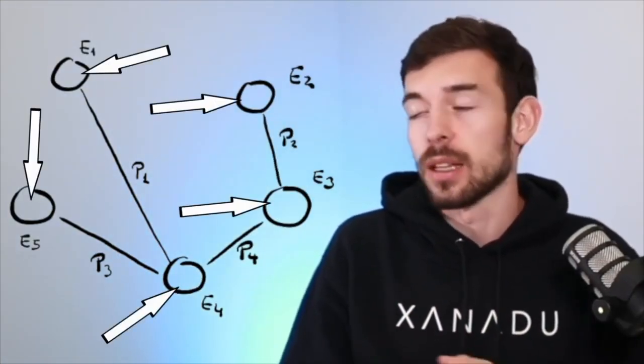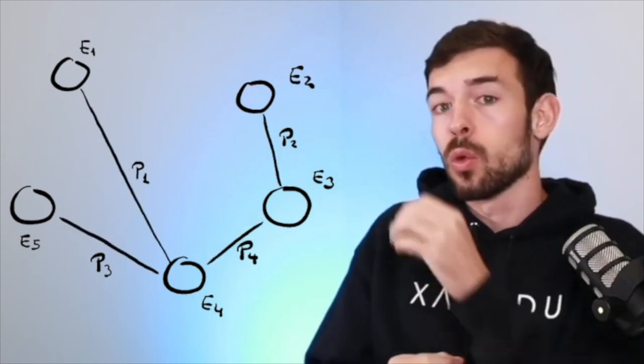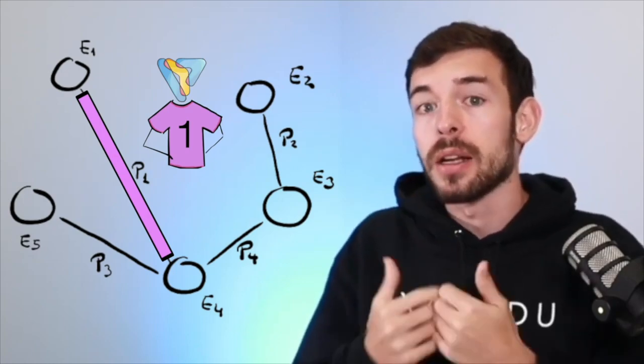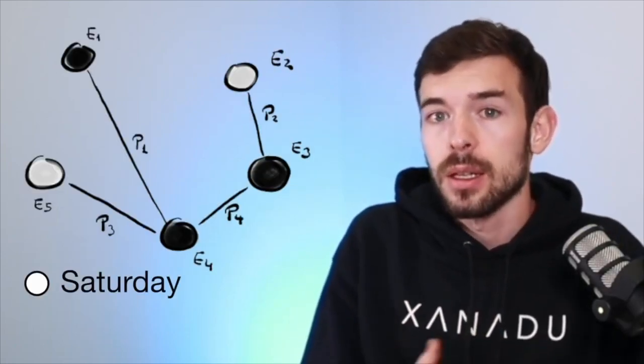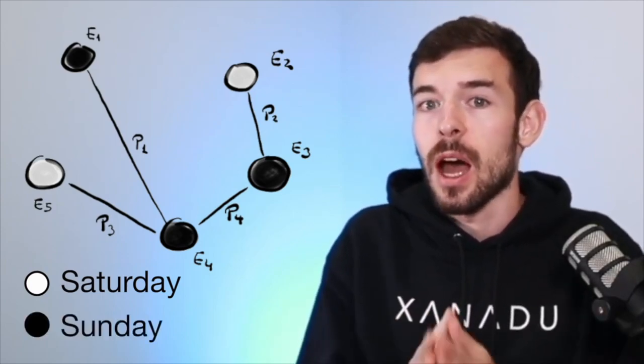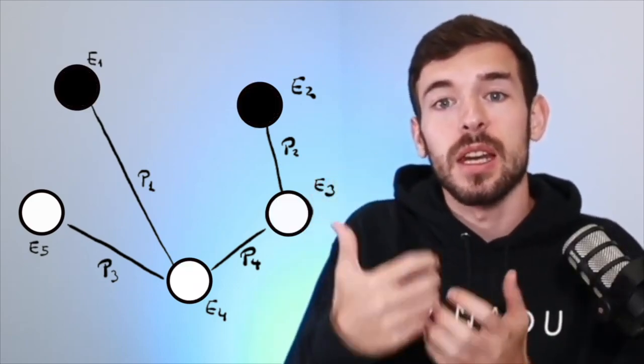The cool thing about this kind of problem is that there is an easy way to represent it with a graph. In our case, the nodes are going to be the events — in that case, we have five. The edges are going to connect the preferences of each person, meaning we connect node one and four because person one is interested in going to both of them. To represent our solution, we paint nodes white for events happening on Saturday and black for events happening on Sunday. Our final goal is to find the best color configuration that maximizes the number of attendees. What we are trying to do is maximize the number of edges connecting nodes of different colors, because that means both preferences of a specific person happen on different days.